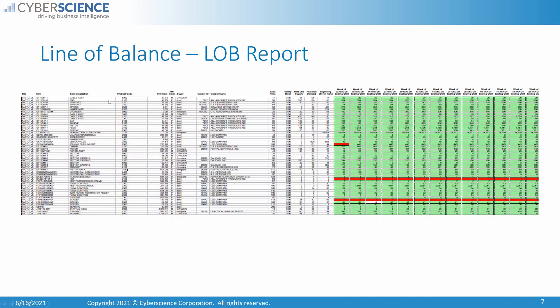Here's another example report for a CSI customer — what they call their line of balance. It shows by part number the quantities on hand, any backlogs, and then for the next 26 weeks shows any week where expected inventory level is negative — negative values in red, positive in green. Complex reporting is something we do with CyberQuery all the time.